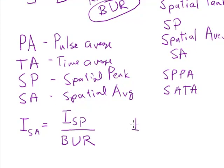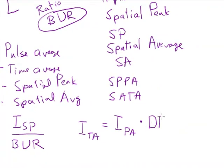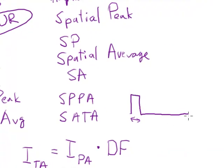And it turns out that the time average can be found by taking the pulse average intensity and multiplying by the duty factor. Remember, the duty factor is the fraction of time that the sound is actually on compared to the total time in between pulses.